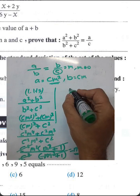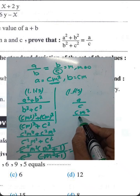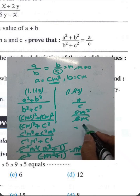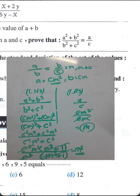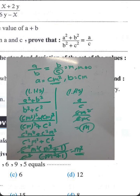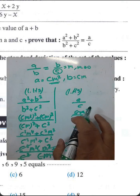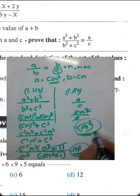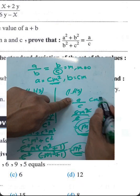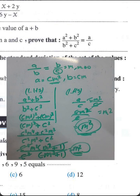For the right-hand side: a over c equals c·m² over c, which simplifies to m². Therefore left-hand side equals right-hand side equals m², and the proof is complete.